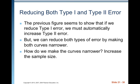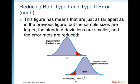Welcome back. We'd like to reduce both Type 1 and Type 2 error. The previous figure seems to show that if we reduce Type 1 error, we must automatically increase Type 2 error. But we can reduce both types of error by making both curves narrower. How do we make the curves narrower? Increase the sample size.